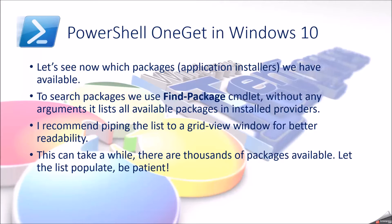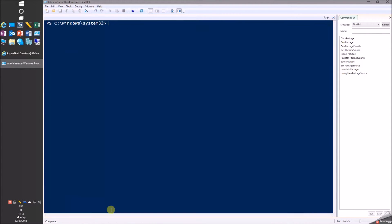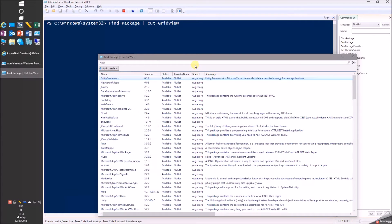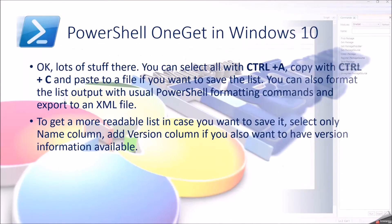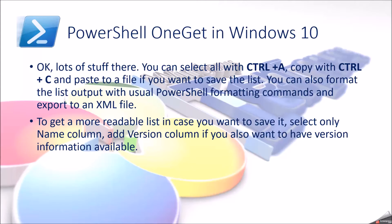This can take a while to populate the list as there are thousands of packages available, so please be patient. You can select all with Ctrl+A and copy with Ctrl+C, then paste to a file if you want to save the list. You can also format the output with usual PowerShell formatting commands and export to an XML file. To get a more readable list, select the Name column and Version column if you also want version information.